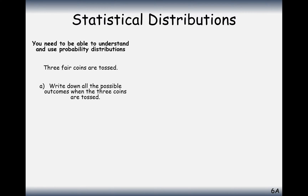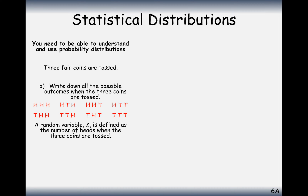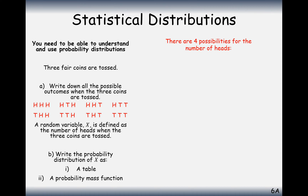Let's have a look at a slightly more complicated random variable where we have different probabilities. Three fair coins are tossed. Write down all the possible outcomes when the three coins are tossed, and then in part B we'll make a probability distribution out of it. A random variable X is defined as the number of heads when the three coins have been tossed, and we can write this in a table.